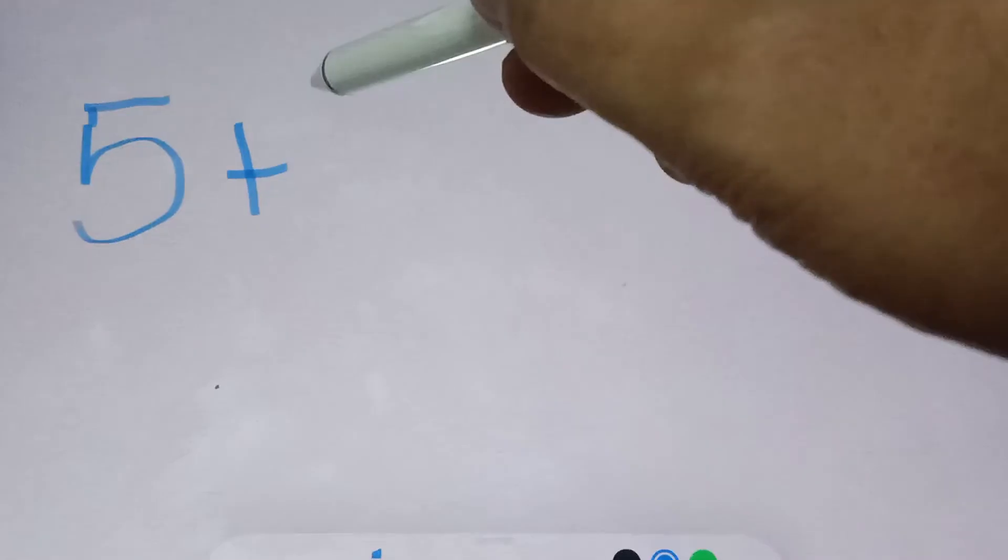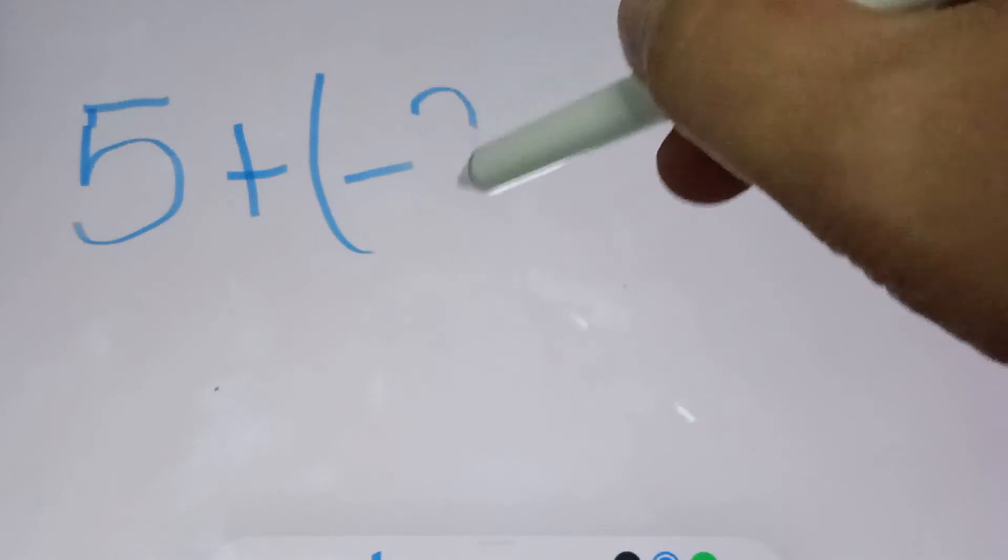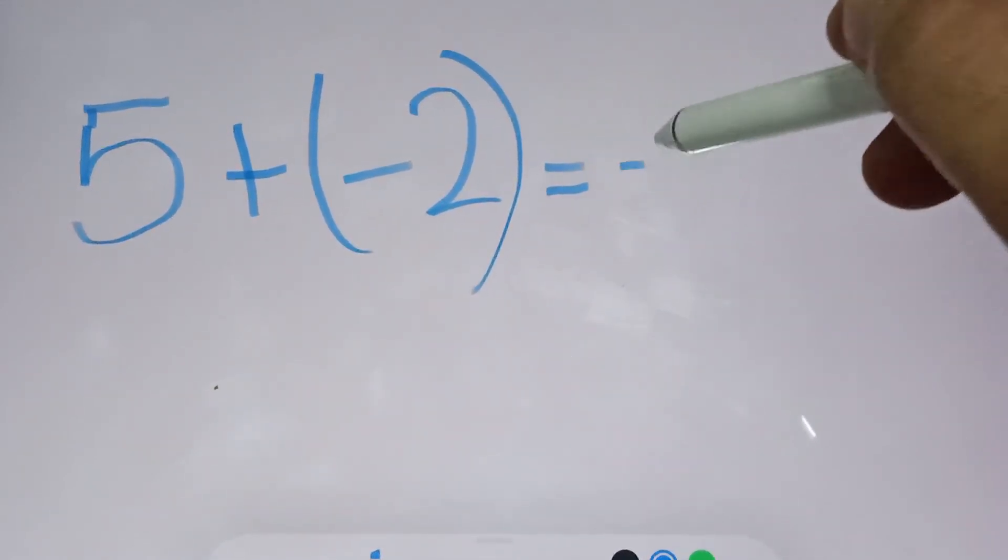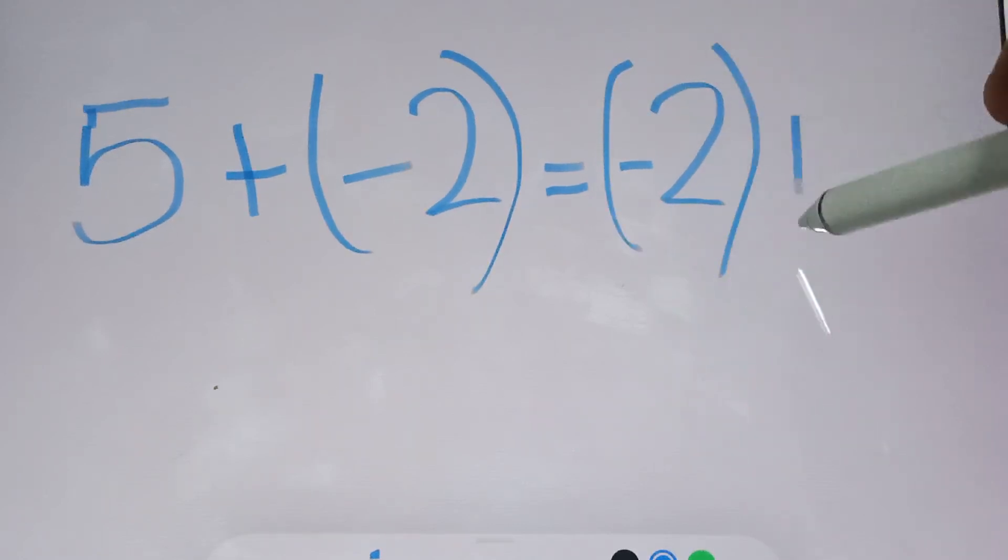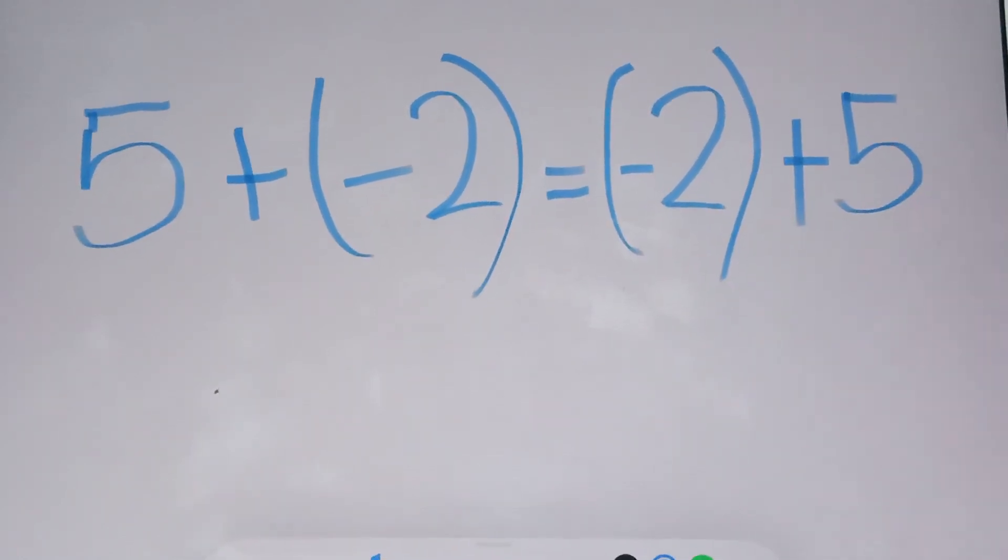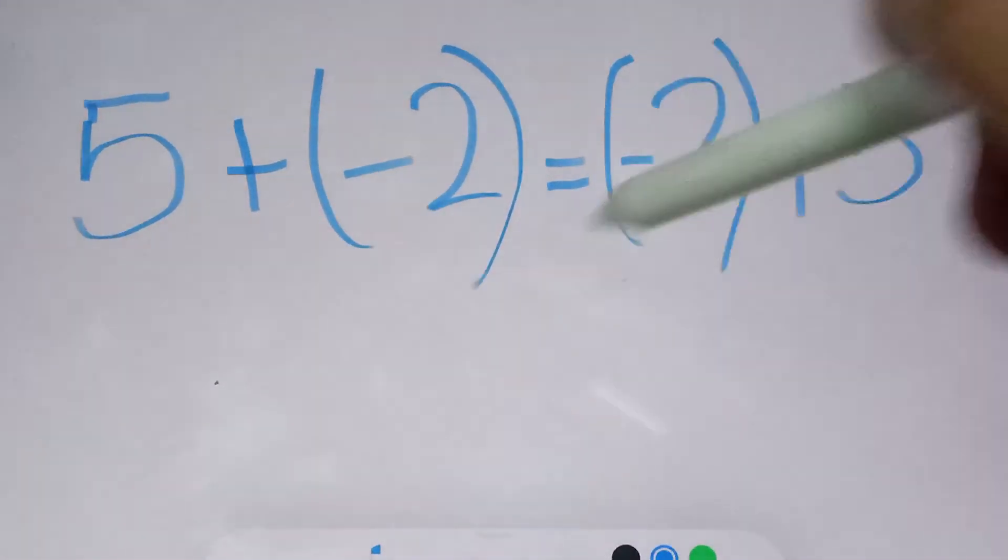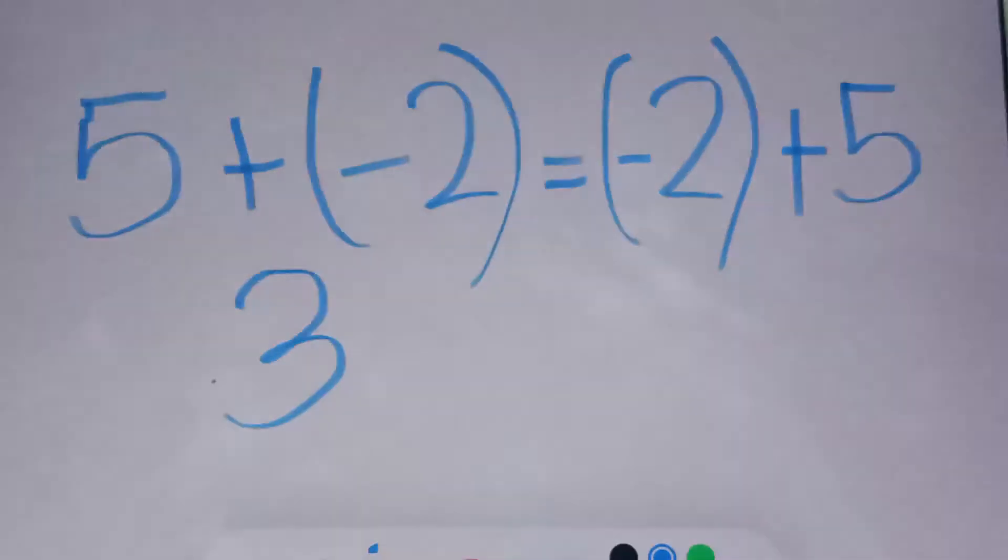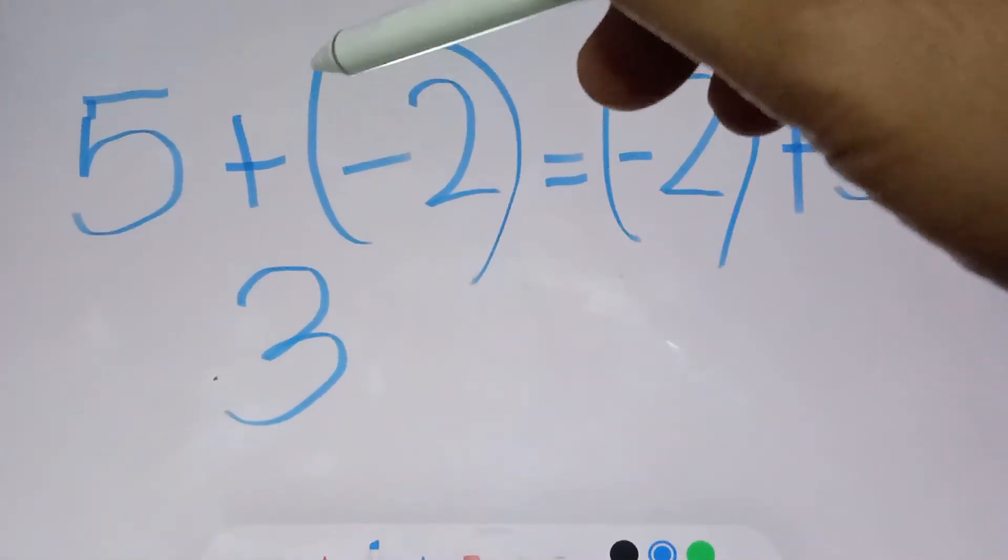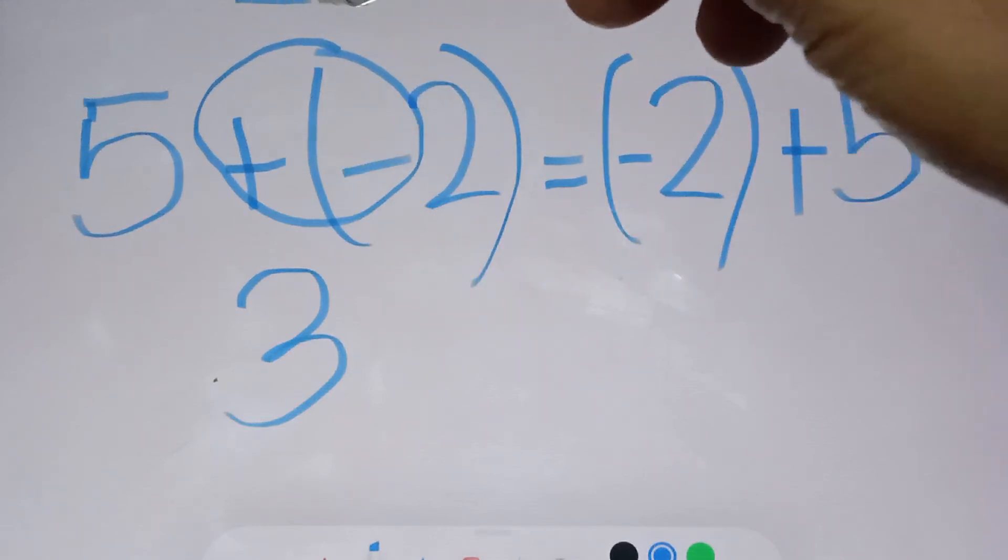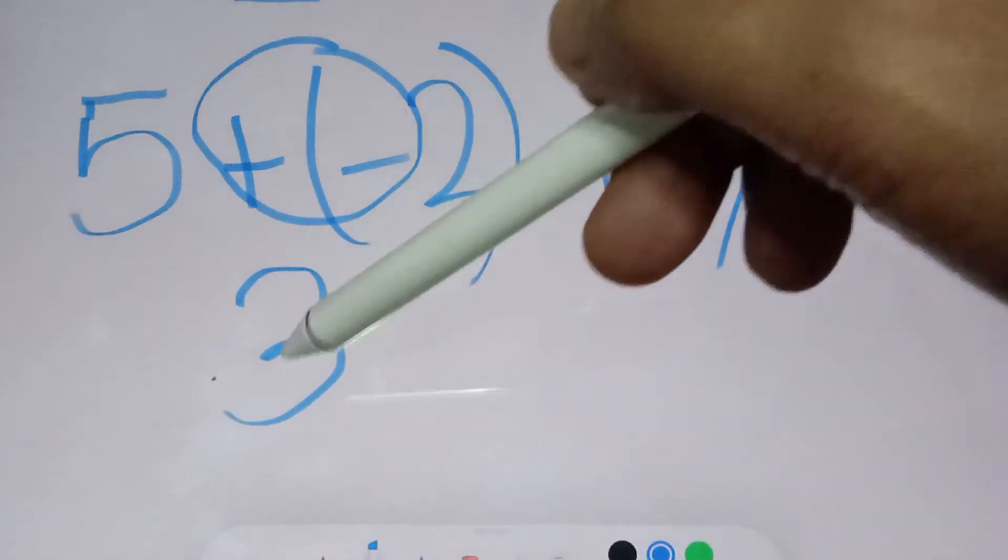Another example, if you have 5 plus negative 2, that is also equal to negative 2 plus 5. So, they're the same, which is the answer is positive 3. Because if you have plus minus here, it will give you negative or minus. Then, 5 minus 2 is 3.